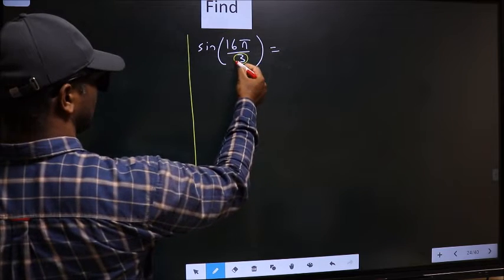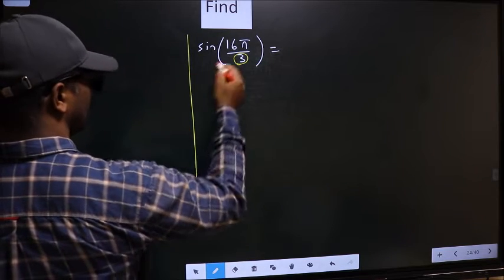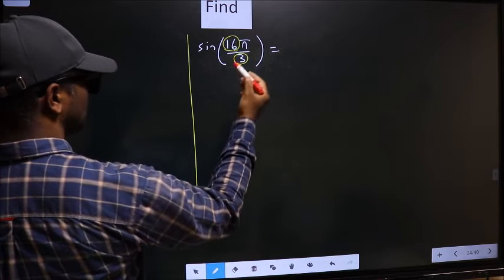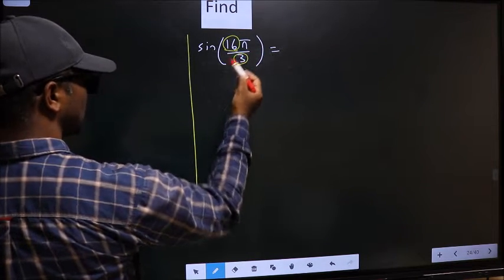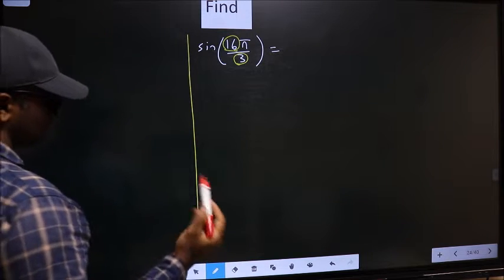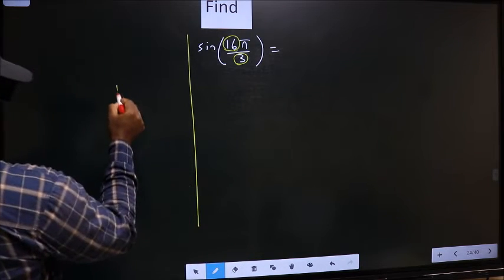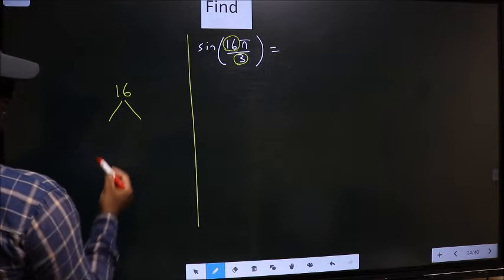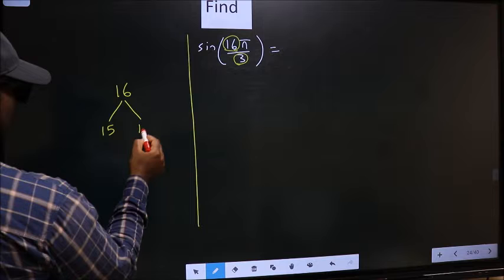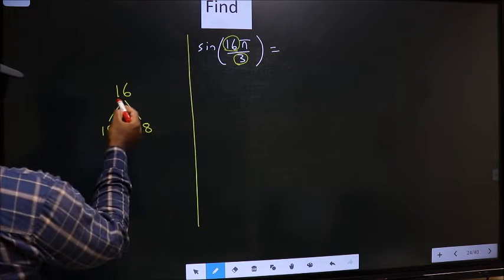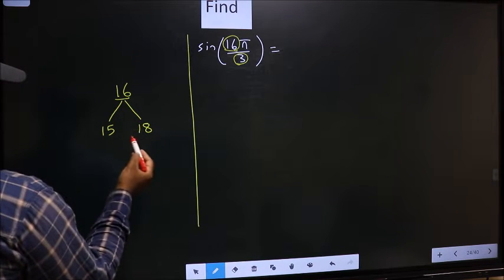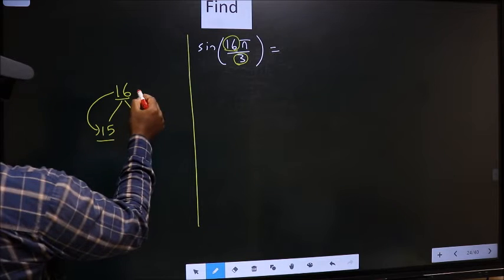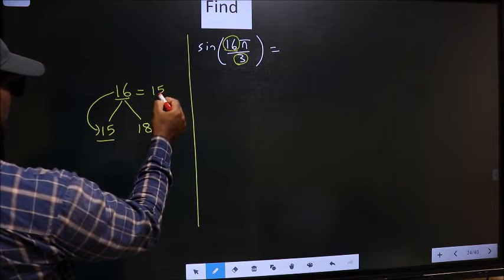Here we have in the denominator 3, in the numerator 16. Now you should look, 16 is close to which multiple of 3. What I mean is 16 and here you write multiples of 3, that is 15 and 18. Now 16 is close to which multiple? It is close to 15.